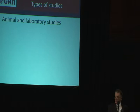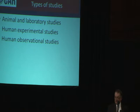So how do we do this in practice? What sort of studies do we use? How do we draw inferences about the relationship between exposures and disease? There are a number of different study types — I'll talk briefly about three: animal and laboratory studies, human experimental studies, and human observational studies. The last is the main one I'll be talking about.